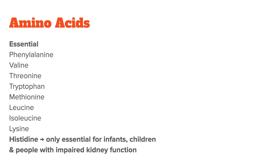This has to do with the fact that the last entry on the list — histidine — is an amino acid that is especially important for human growth. It is only essential in infants, children, and people with impaired kidney function. So for healthy adults, it actually becomes non-essential later on in life.